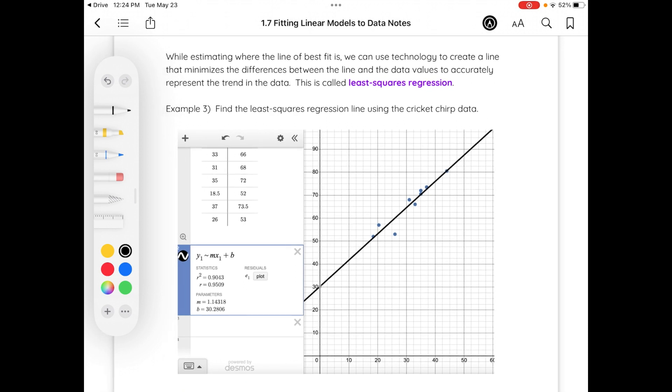While estimating the line of best fit that we just did on the first page can be useful, we can use technology to create a line that minimizes the difference between the line and the data values as accurately as possible to find this trend. This is called the least squares regression. Find the least squares regression line using our data. So you'll notice above I still have the same table from the previous page just on a new line. I put into Desmos this equation.